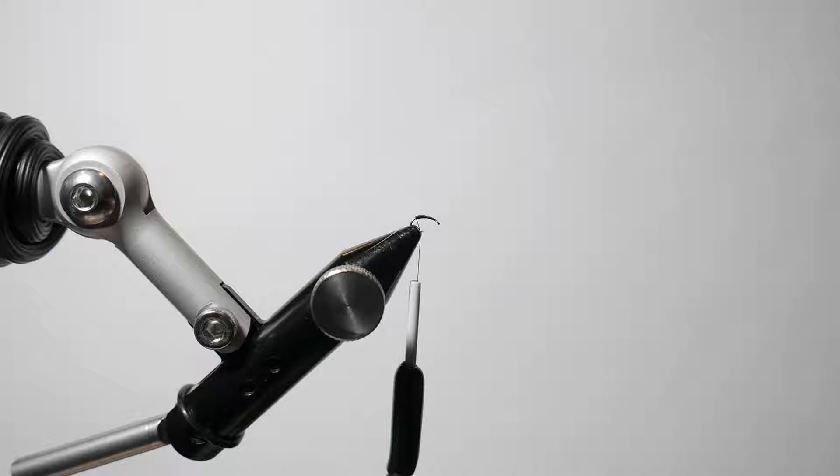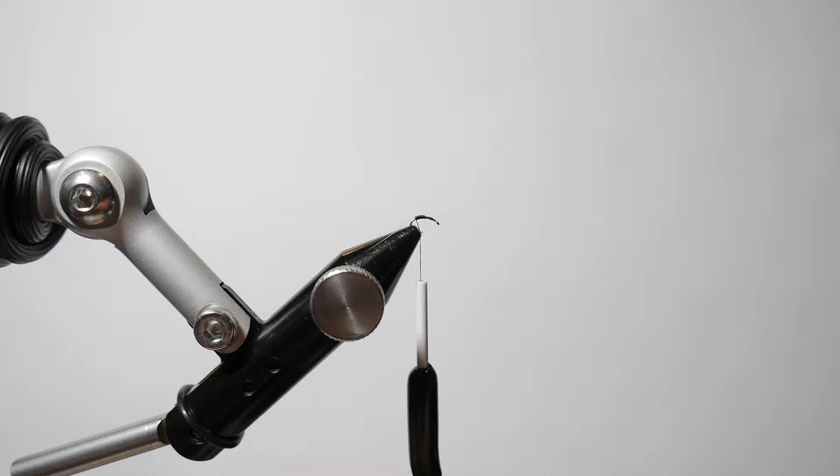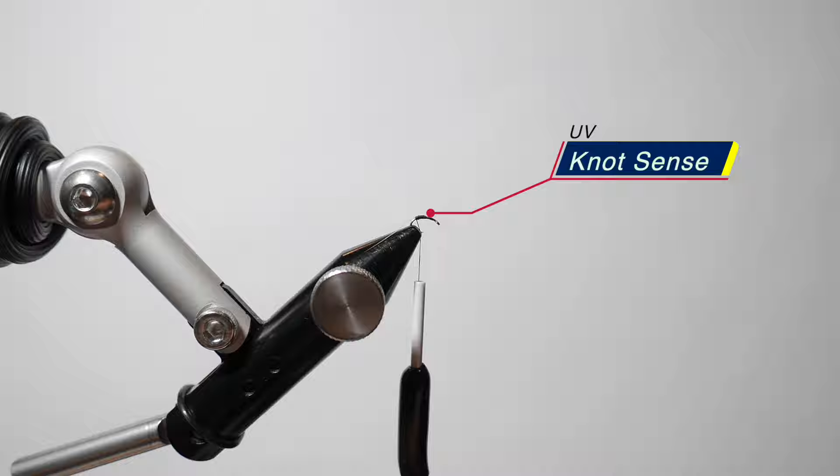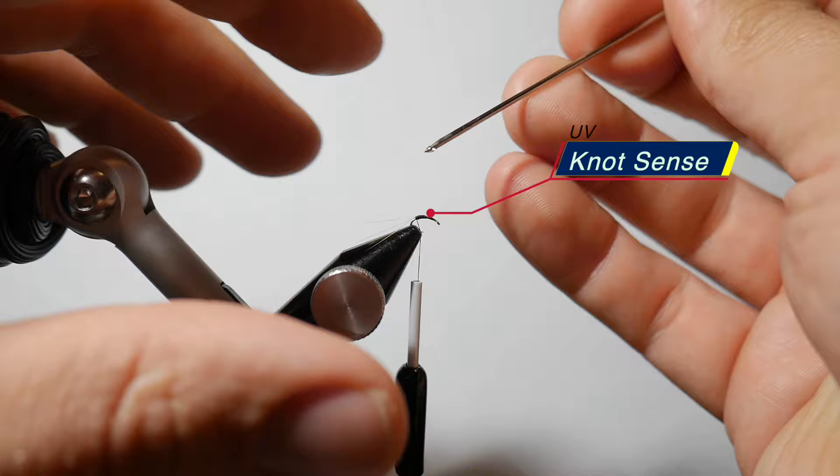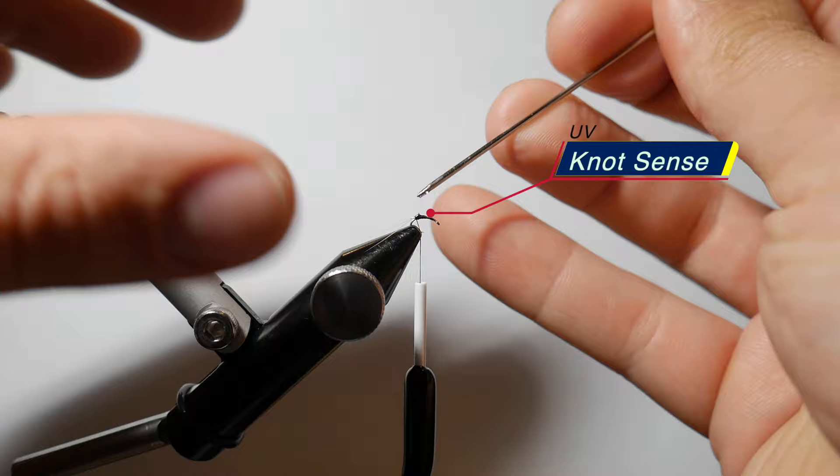And then what I want to do is I want to take this UV Knot Sense product. You could also use Bone Dry here, but I want to take some sort of UV cure and I want to just put it on a bodkin and barely tap it right on the back part of the thread and the beginning part of the tail. And what this is going to do is really lock in right where those fibers are and they won't move from here on forward. And that's kind of what we want, want to keep those separated out. I think the trout see and key in on that.